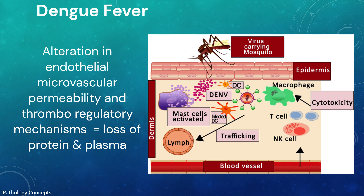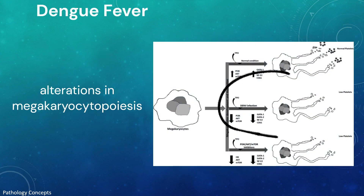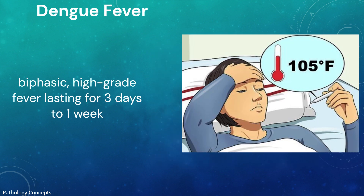The most severe clinical presentation does not correlate with high viral load. Alteration in endothelial microvascular permeability and thromboregulatory mechanisms lead to increased loss of protein and plasma. Thrombocytopenia may be related to alteration in megakaryocytopoiesis, manifested by infection of human hematopoietic cells and compromised progenitor cell growth, causing platelet dysfunction, damage, or depletion leading to significant hemorrhages.